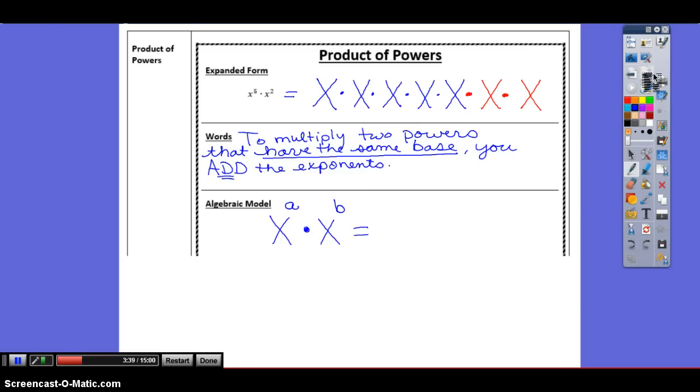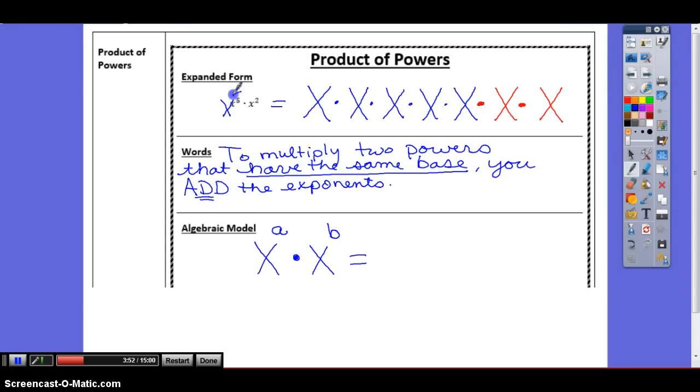Alright, on to the rest of the unit. Lesson 1. Now if I have x to the 5th power times x to the 2nd power. To write that out in expanded form, all that means is I have 5 x's, 1, 2, 3, 4, 5 times 2 more x's, 1, 2. What would my answer be if I were to simplify that? That would be equal x to the 7th power because we add our exponents. In words, products of power, what does that mean? To multiply 2 powers that have the same base, you add the exponents.